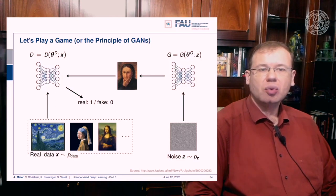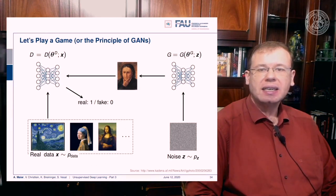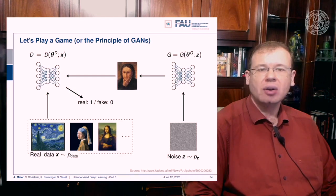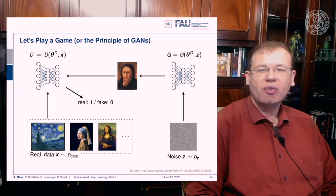We replace the two with deep neural networks: D is the discriminator and G is the generator. The generator receives some latent input — some noise variable z — and from the noise variable and its parameters it produces an image. The discriminator then tries to figure out whether this was a real or fake image, outputting 1 for real and 0 for fake.